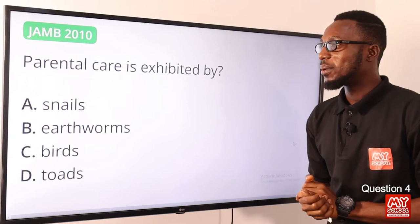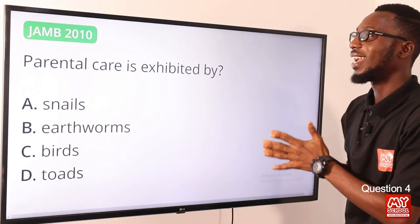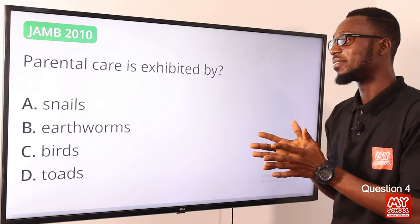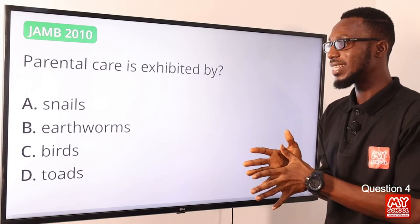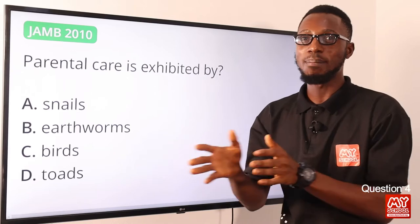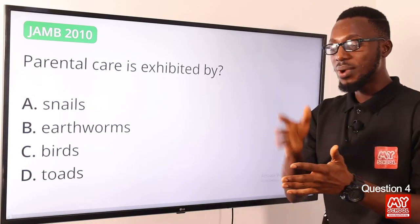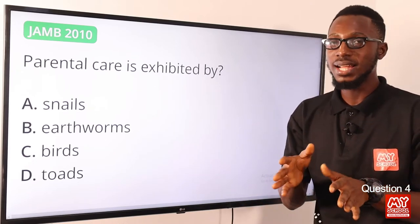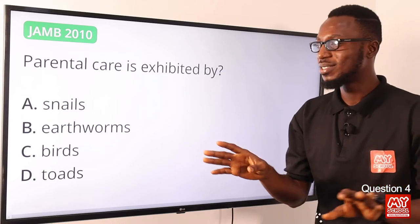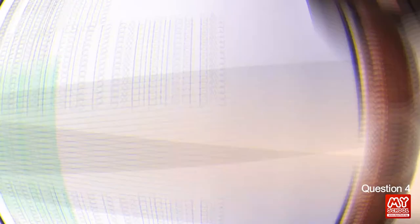Question 4: Parental care is exhibited by which organisms? Parental care is present in birds and mammals. When you talk about reptiles, fishes, and amphibians, in most cases it is absent. So the correct option is option C, for birds.